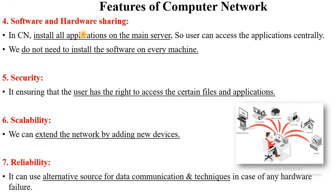The next feature is software and hardware sharing. There is one centralized server and multiple computers connected to it. A particular application or software is installed on that server, and all computers can use that software regularly — no need to install software on each and every machine. This is called software and hardware sharing: install once and use it everywhere in the network. The next and most important feature is security. These days, different cybersecurity threats exist. Users have proper permissions to access particular files, and proper authorization and authentication processes are used in computer networks, providing the best security feature.